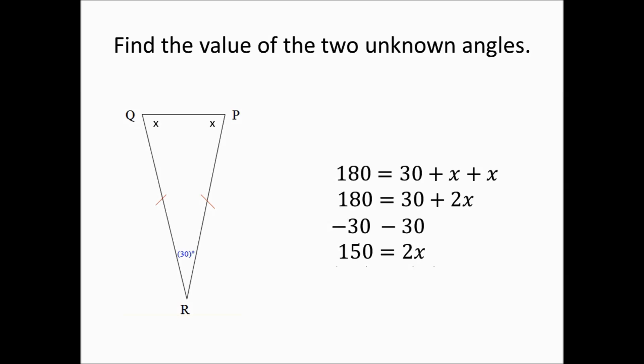We have 150 equals 2X, so we divide both sides by 2 to isolate X. 150 divided by 2 gives us 75, which equals X. So the measurement of the two unknown angles is 75 degrees.